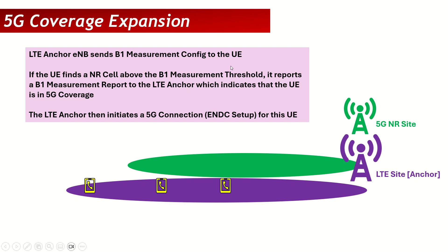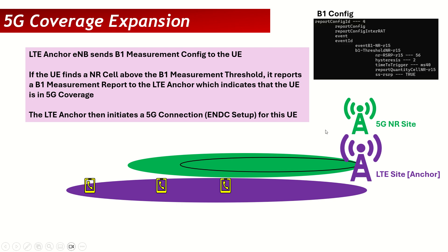On the technical front, this is done using the B1 measurement config. The LTE anchor sends an RRC message to these 5G capable mobiles which contains the B1 measurement threshold. For example, if the B1 measurement threshold is -110 RSRP or -100 dBm, in the message it will look like this: the B1 threshold RSRP is set to 56. Now 56 means -100 dBm — you get that by subtracting 156 from the value: 56 minus 156 equals -100 dBm.